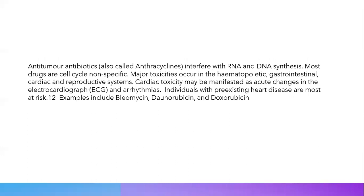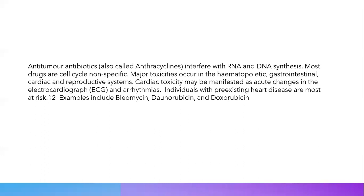Anti-tumor antibiotics, also called anthracyclines, interfere with RNA and DNA synthesis. Most drugs in this class are cell cycle non-specific. Major toxicities occur in the hematopoietic, gastrointestinal, cardiac, and reproductive systems. Cardiac toxicity may be manifested as acute changes in the electrocardiogram and arrhythmias; individuals with pre-existing heart disease are most at risk. Examples include bleomycin, daunorubicin, and doxorubicin.